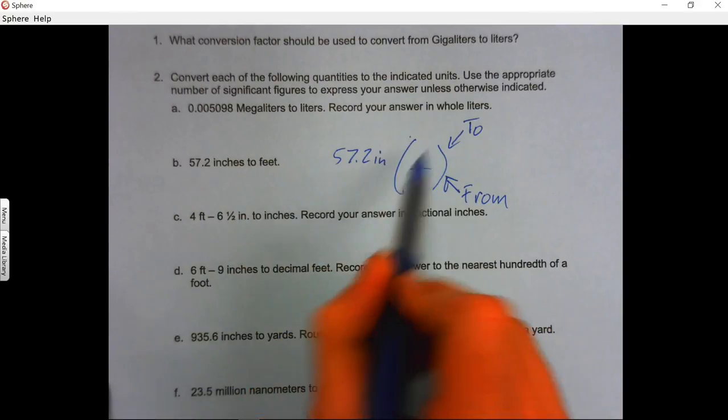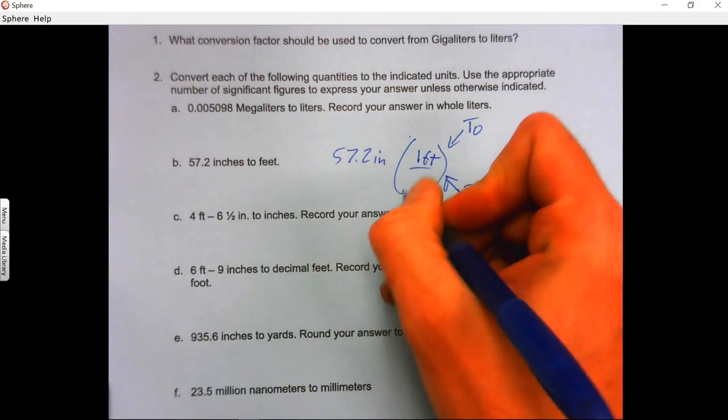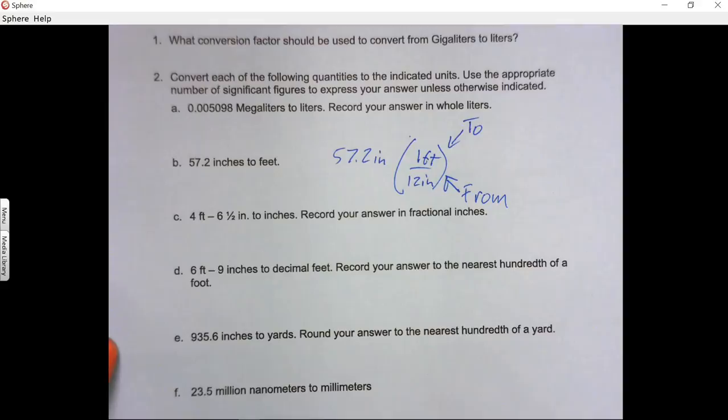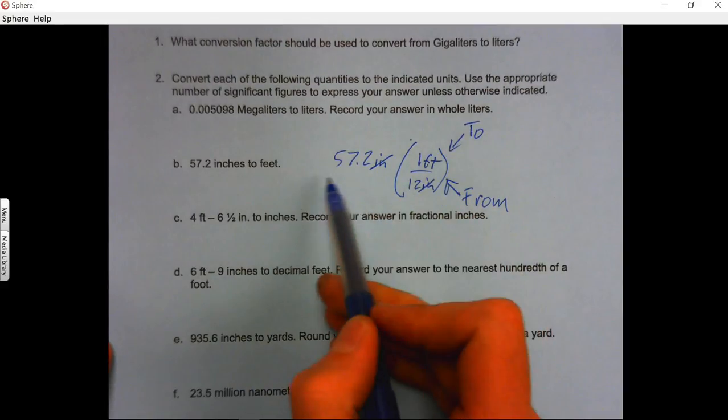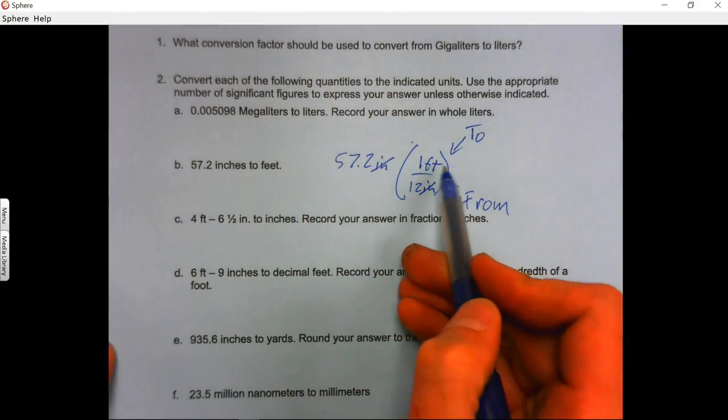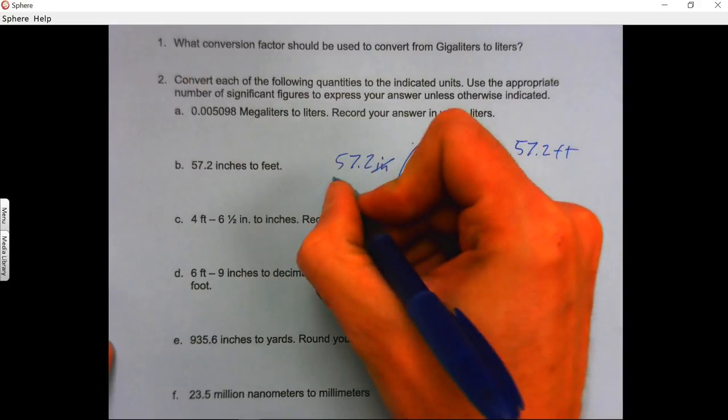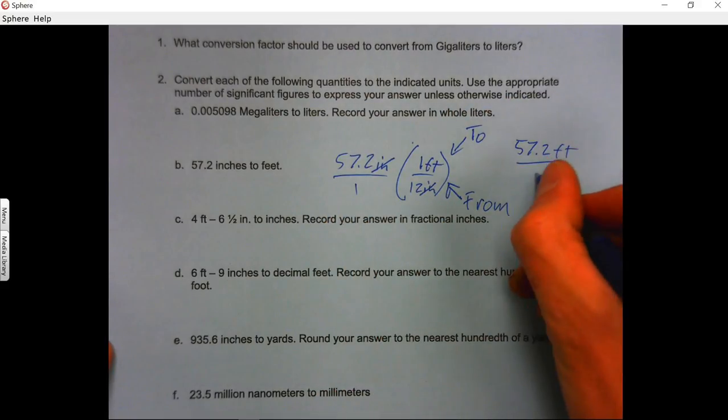All right, so to feet. So that means you have one foot equals 12 inches. Okay. So we have one over our inches, and we have 57.2 times one foot, which is 57.2 feet. And then you have over one, one times 12 is 12.